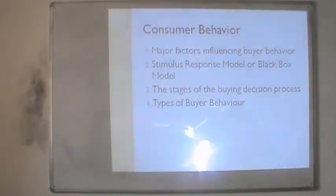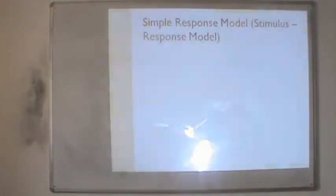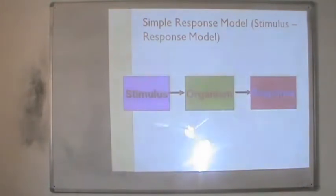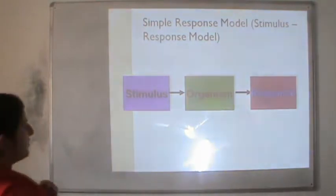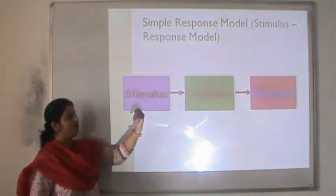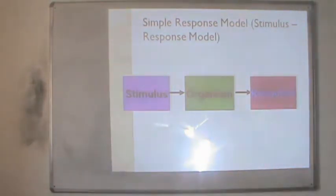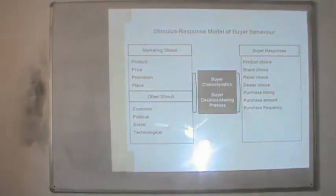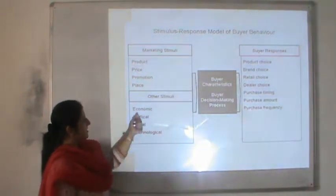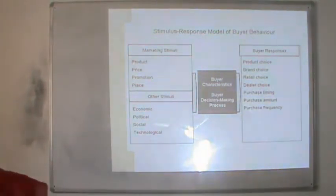The stimulus-response model, also known as the black box model, works as follows: any initiation or spark from inside the company that affects the organism is expected to generate some response or reaction. The stimulus can be broadly divided into two categories — the marketing stimuli and other stimuli. The marketing stimuli are typically the four P's, whereas the other stimuli are the external environmental factors from the PEST analysis: political, economical, social and technological.